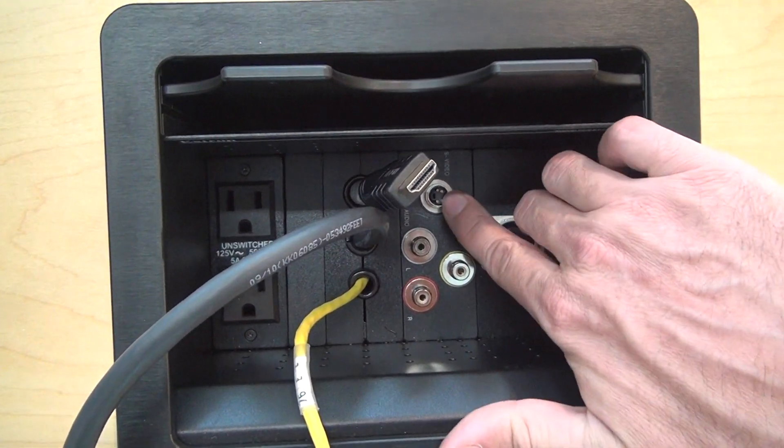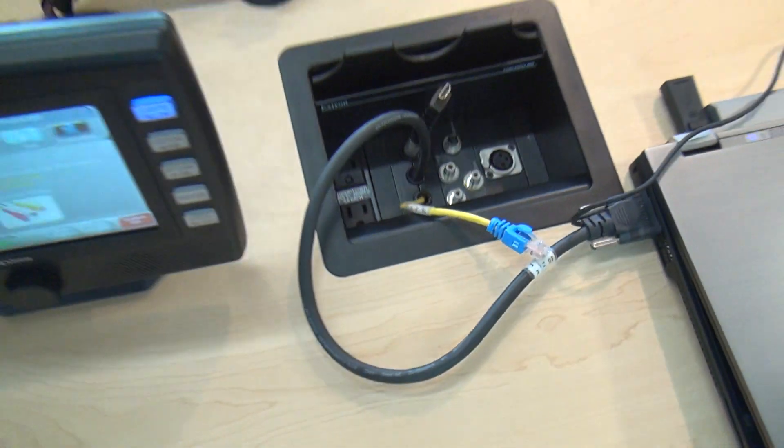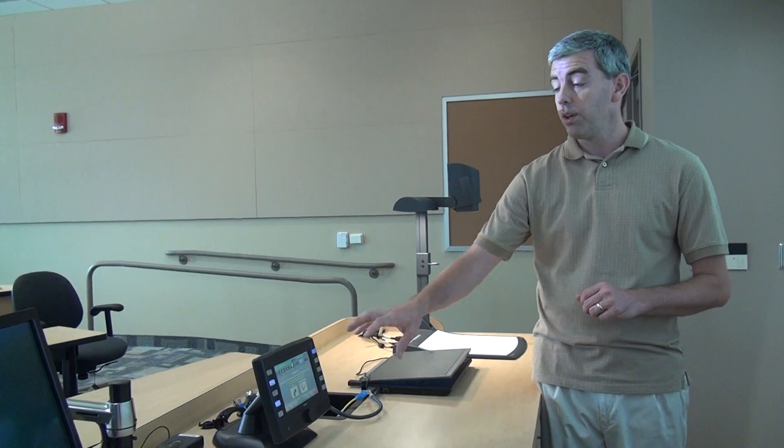This is the composite video and this is the S video connection, and what those would be used for is if you had like a video camera that you wanted to come in and hook up or you had your iPod or something that you wanted to play, you could plug into those, select the right option, and you'd be able to show it in front of the class there.